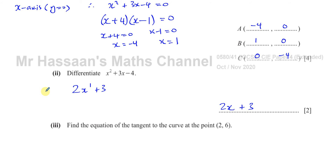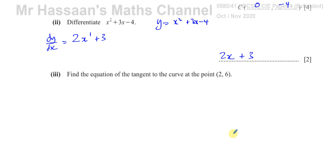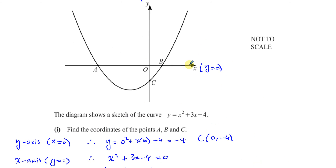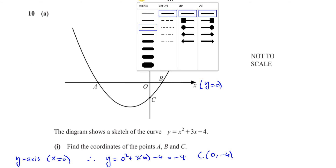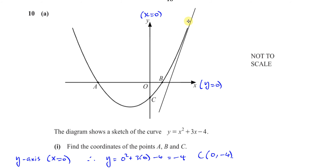This is called dy/dx. If y equals x squared plus 3x minus 4, then dy/dx equals 2x plus 3. Now, the question asks us to find the equation of the tangent to the curve at a given point. This mixes differentiation with straight-line graphs. A tangent is a straight line that brushes the curve at a certain point but doesn't cut through it.